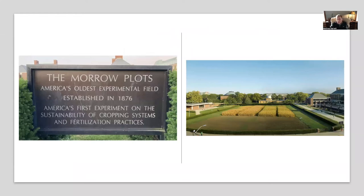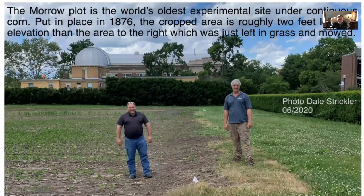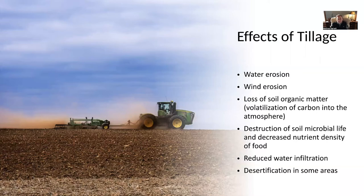The Morro Plots is the oldest experimental field in America, established in 1876, right in the center of the University of Illinois campus in Champaign-Urbana. If you go there, the ground adjacent to the agricultural experiment area sits about two feet higher than where it's been tilled and planted. Topsoil was lost through water erosion, wind erosion, and volatilization of carbon into the atmosphere as organic matter is exposed to air and volatilizes as CO2.